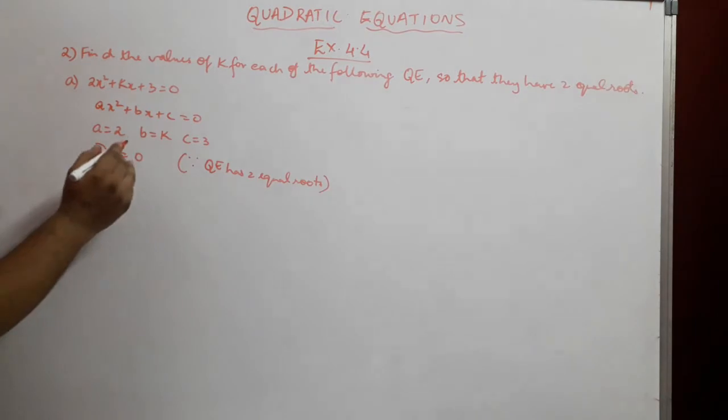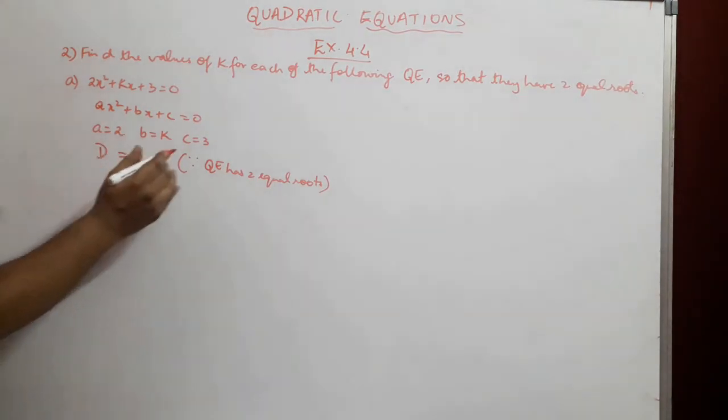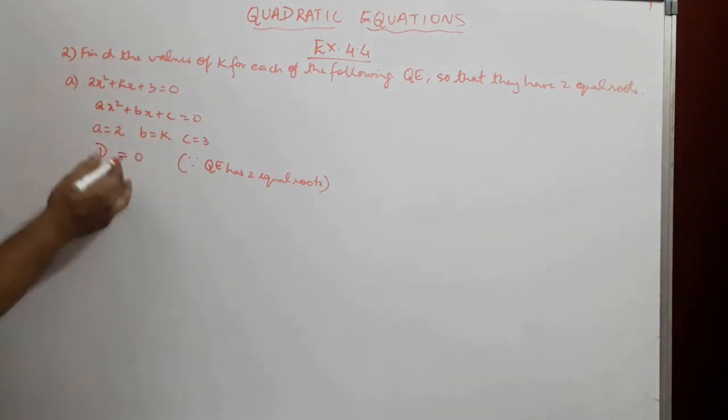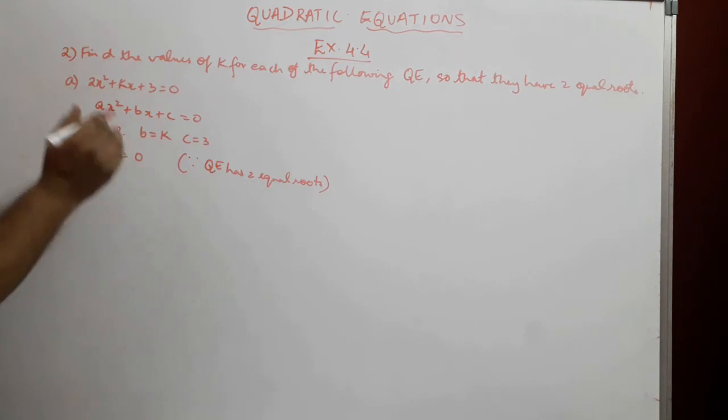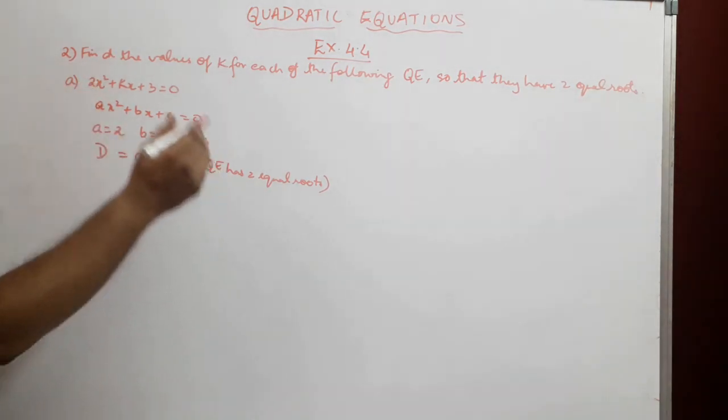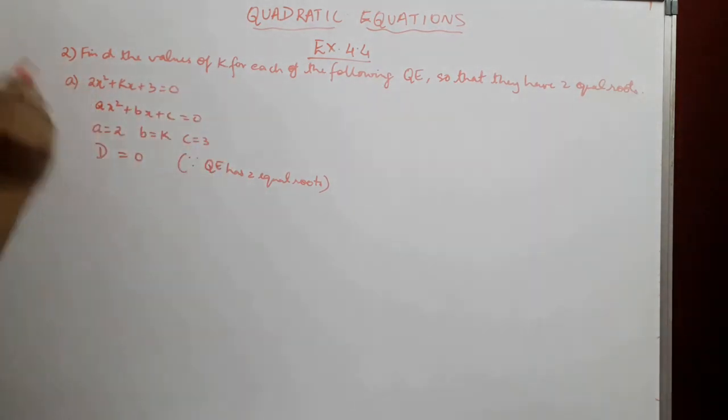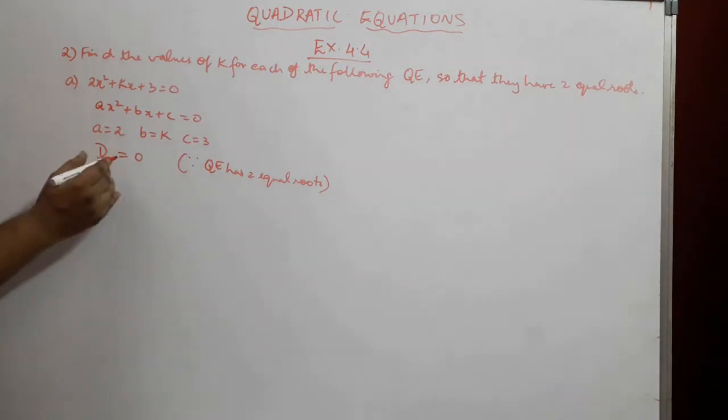When discriminant is greater than 0, they have two distinct roots, and when discriminant is less than 0, we do not have real roots. We have imaginary roots. Here we have two equal roots, so D = 0.